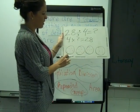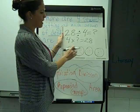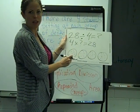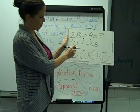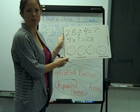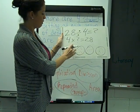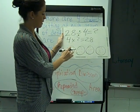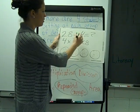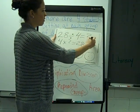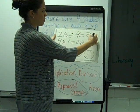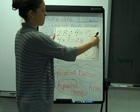You have to be careful to get the same amount in each one, and to make sure you can see each individual dot so you don't miscount. Counting them up: 1, 2, 3, 4, 5, 6, 7. So 28 divided by 4 equals 7.